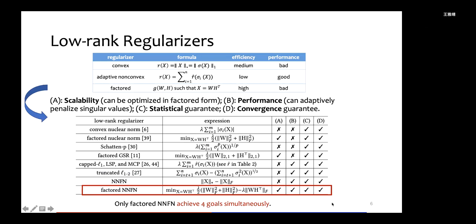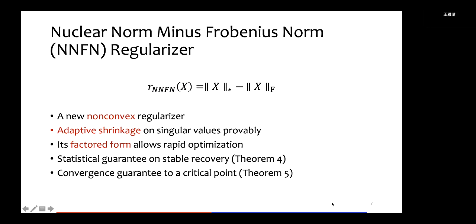To see this clearer, we summarize the three types of low rank regularizers in the above table. We also list existing representative low rank regularizers in the below table and compare them in terms of four perspectives: scalability, performance, statistical guarantee, and convergence guarantee. As you can see, only the factored NNFN on the last row can achieve four goals simultaneously, and this factored NNFN regularizer is proposed in this paper.